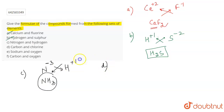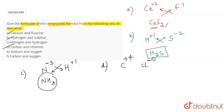For part D, you have carbon and chlorine. Carbon has a valency of +4 because it can gain or lose four electrons — in this case +4 since chlorine is present. Chlorine has a tendency to gain one electron and hence a valency of -1. Interchanging the valencies gives the formula CCl₄.